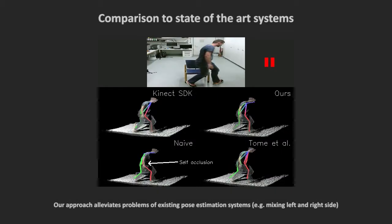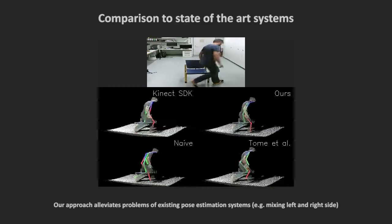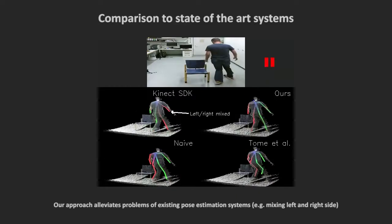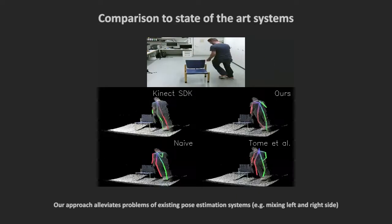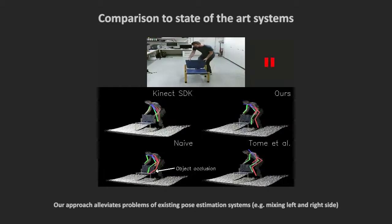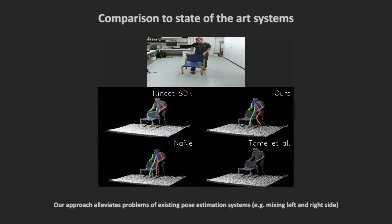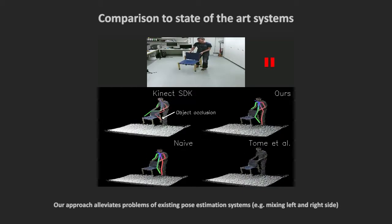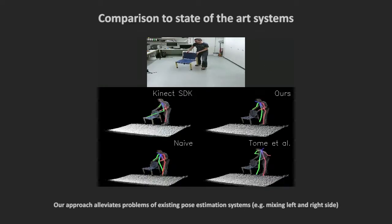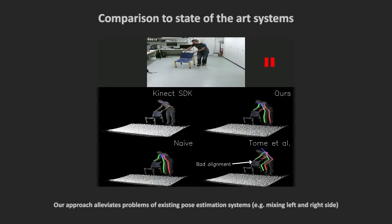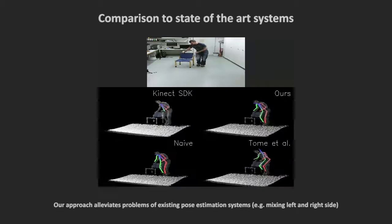Our approach can deal with self-occlusion. It doesn't mix left and right side when the person is facing away from the camera. It is more robust to object occlusions, and its predictions are well aligned with the point cloud compared to approaches that don't use depth information.